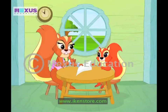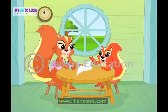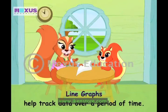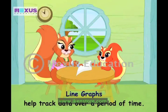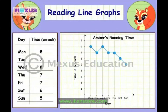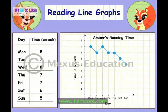A line graph would help. Line graph? Is that another type of graph? Yes. Line graphs are specially good if you want to track some data over a period of time. Here it is. On the left is the record of the time you took on each of the days. On the right is a line graph of this record. The day is shown on the horizontal line and the time taken is shown on the vertical line. A line graph helps us see the changes in your running time over the week.